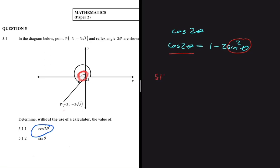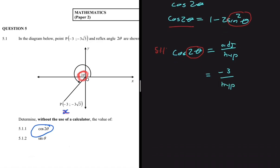For 5.1.1, cos of 2θ means the adjacent divided by the hypotenuse, because the angle itself is 2θ — that is given to us as the reflex angle. We're not given θ and asked to find cos 2θ; we actually have the angle being 2θ, which is a very special case. The adjacent is the x-value of the given point, which is −3, so cos 2θ equals −3 divided by the hypotenuse r.